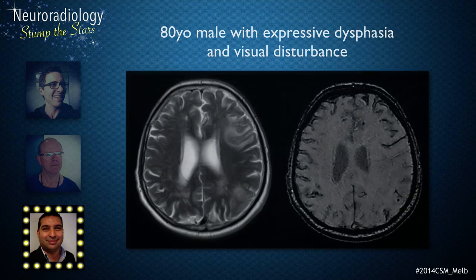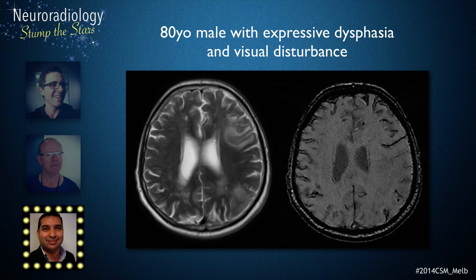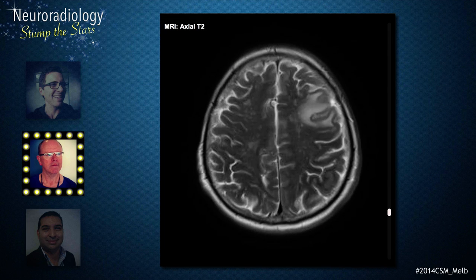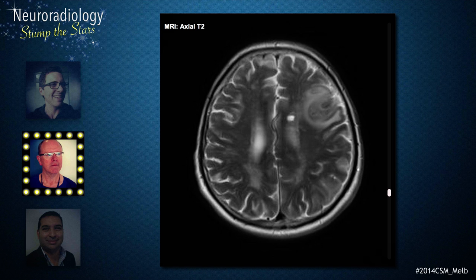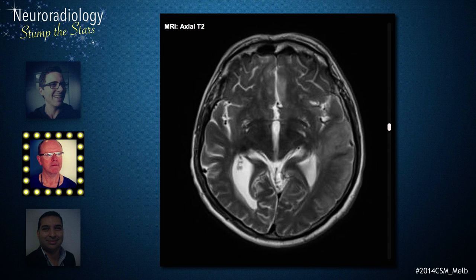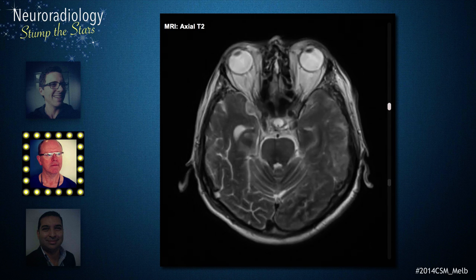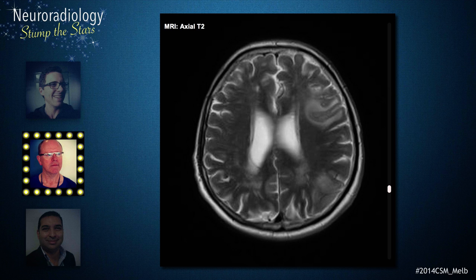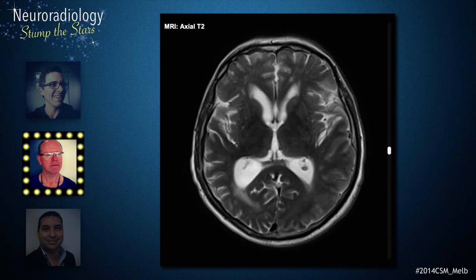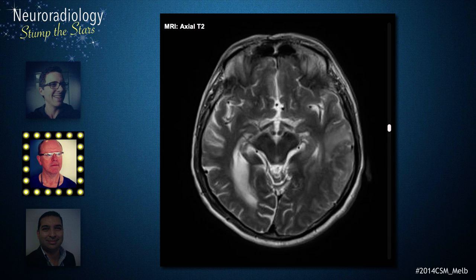The case is of an 80-year-old man presenting with expressive dysphagia and visual disturbance. The T2 axial scans demonstrate multifocal abnormalities throughout both cerebral hemispheres. The most striking abnormalities are in the left cerebral hemisphere, in the frontal lobe, as well as the parietal lobe, extending into the posterior temporal lobe.